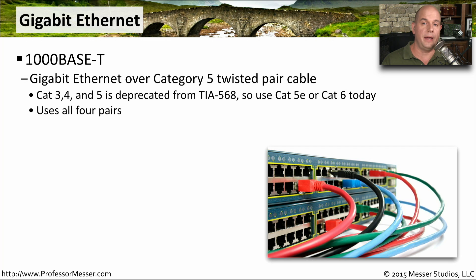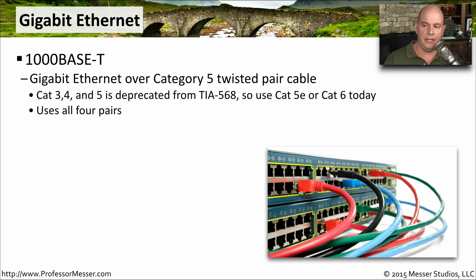The next major upgrade was Gigabit Ethernet running at 1,000 megabits per second, which is why we have the 1000BaseT standard. This is Gigabit Ethernet over Category 5 cable. We generally don't see Category 3, 4, or 5 being sold any longer — the standards today tend to be Category 5e, Category 6, or Category 6A. The 1000BaseT standard uses all four pairs, or all eight wires, within the cable, so it is wired differently than 10 or 100 megabit Ethernet.